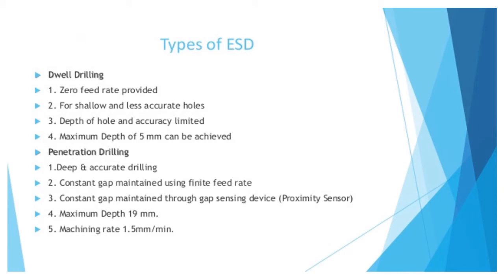The electrolyte temperature is maintained through a temperature control unit. A filter is used to filter out metallic hydroxide particles. Now, the types of ECD: the first type has zero feed rate, used for shallow and less accurate holes. Depth of hole and accuracy are limited, with a maximum depth of 5 mm achievable.